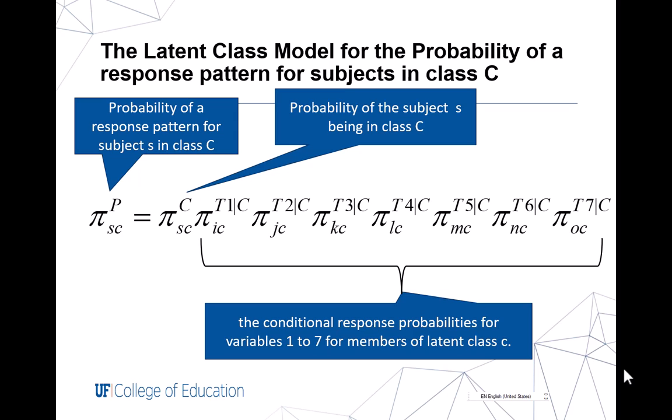This is one representation of a latent class model in terms of the probability of a response pattern for subjects in class C. You notice that the probability of a response pattern is a function of the product of the probability of a